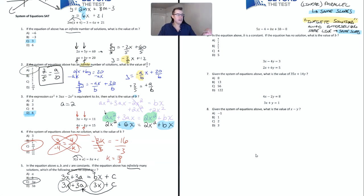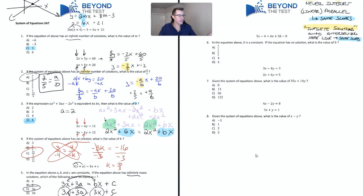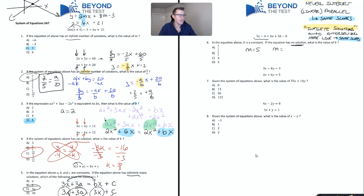Question six: B is a constant, and the equation has no solution — what is the value of B? No solution means the lines must have the same slope. The slope on the left side is 5. The slope on the right is B — it's everything in front of the x value. So B must also equal 5. That's choice D.